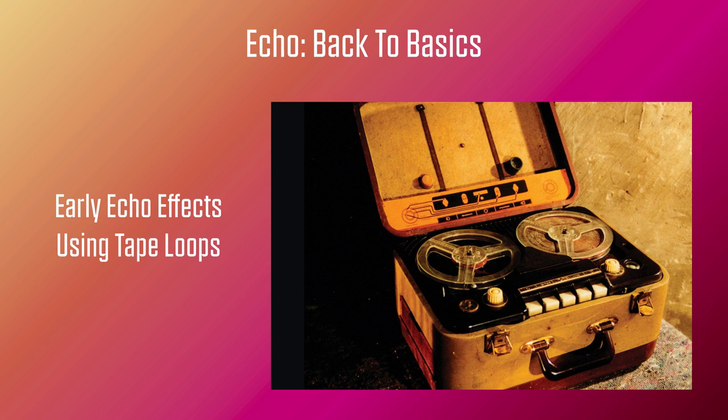Dropping the tape speed to 7.5 inches per second doubled the delay time. Here's an example of slapback echo — slapback sounds something like this. At the highest tape speeds, the effect was also used to create what we call artificial double tracking, or ADT.